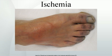Ischemia is a vascular disease involving an interruption in the arterial blood supply to a tissue, organ, or extremity that, if untreated, can lead to tissue death. It can be caused by embolism, thrombosis of an atherosclerotic artery, or trauma. Venous problems like venous outflow obstruction and low flow states can cause acute arterial ischemia. An aneurysm is one of the most frequent causes of acute arterial ischemia.